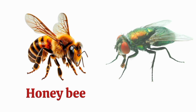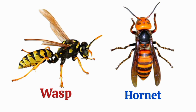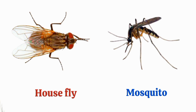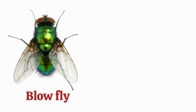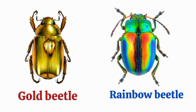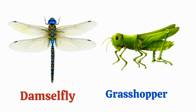Wasp, hornet, housefly, mosquito, scorpion, bee, spider, dragonfly, blowfly, flesh fly, gold beetle, rainbow beetle, damselfly, grasshopper, house cricket, bush cricket.